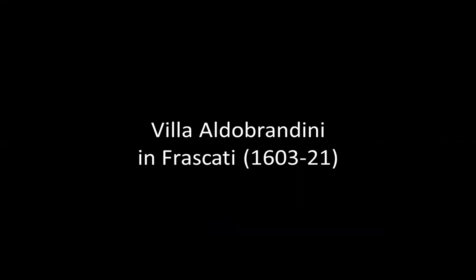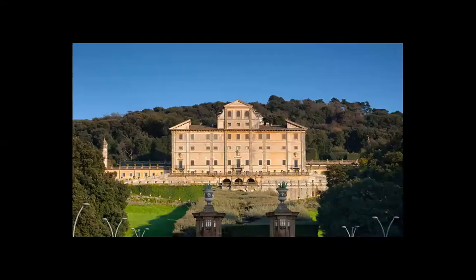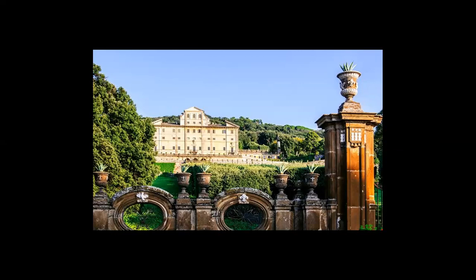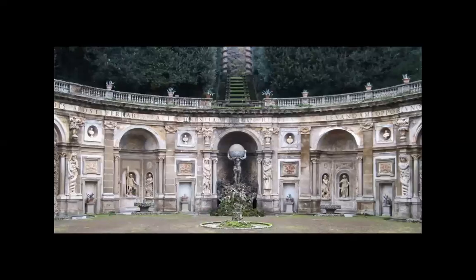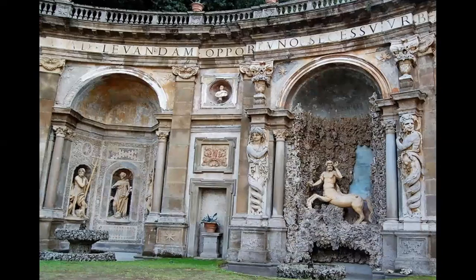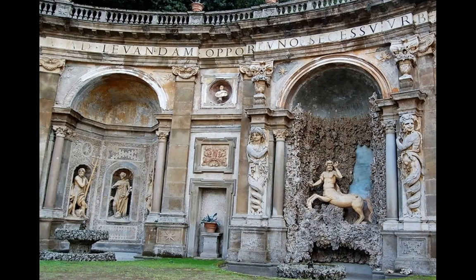Frascati — Villa Aldobrandini in Frascati. A big estate. Look what's going on here — it's for the joy of the eye and the joy of the soul. It's mythology here and all kinds of narrative. This is a narrative architecture, something we don't do these days. We don't tell stories through our walls, through our buildings. But at that time, narration was very important and people knew mythology.